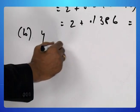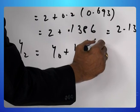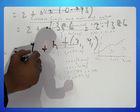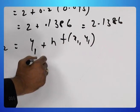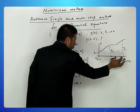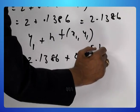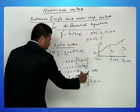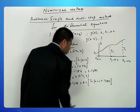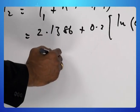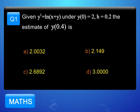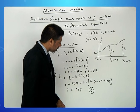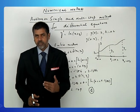For the next step, y₂ = y₁ + h·f(x₁, y₁). y₁ is 2.1386, h is 0.2, and f(x₁, y₁) = log(x₁ + y₁) = log(0.2 + 2.1386). Estimating this gives approximately 2.149, which corresponds to option B. This is a two-step execution of Euler's method in steps of 0.2.